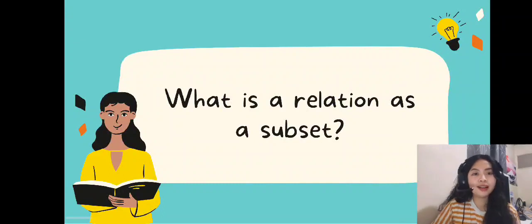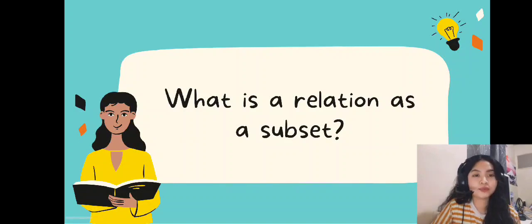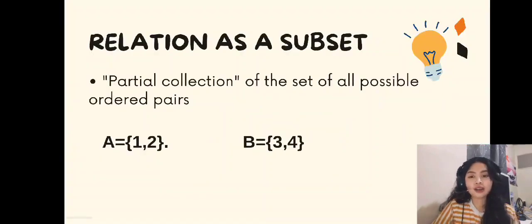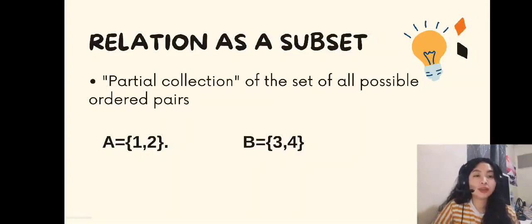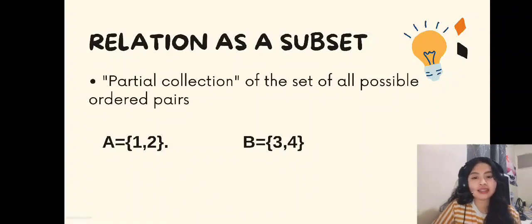So, let's go to our main topic. What is a relation as a subset? A relation as a subset is the partial collection of the set of all possible ordered pairs. In other words, a relation as a subset is the set of all possible ordered pairs.